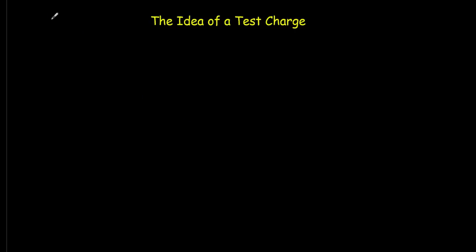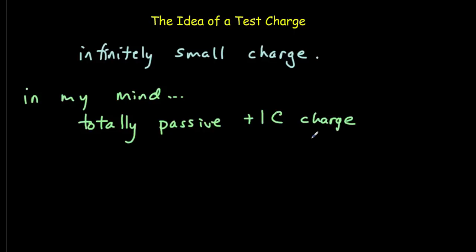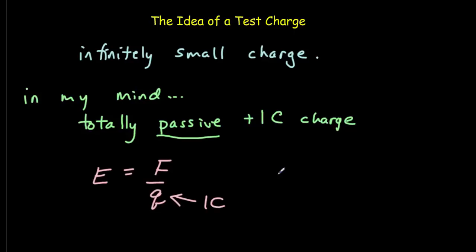Officially, a test charge is any infinitely small charge. But I like to imagine a totally passive positive one coulomb charge. A one coulomb charge is huge — it creates a large electric field of its own — so I have to specify that it's passive, meaning it doesn't create any electric field of its own. The reason I like this is that the electric field is the force per unit charge, and if my test charge is one coulomb, the value of the electric field will be equal in value to the force — they'll have the same size.